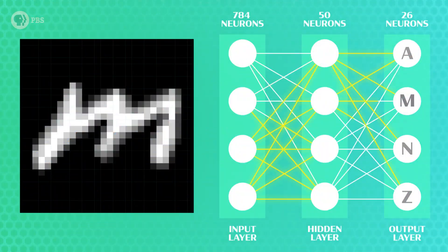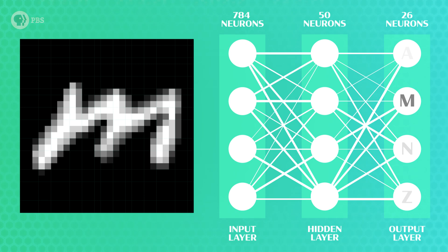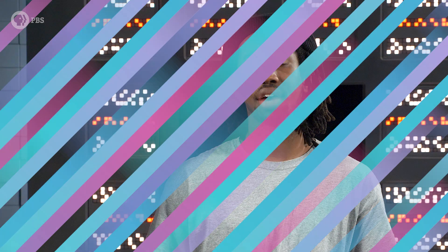After each of the 60,000 images are processed, the network will compare its guess to the actual label and update weights and biases to give a better guess for the next image. And after multiple epochs of the same training dataset, the neural network's prediction should keep getting better, thanks to those updated weights and biases.